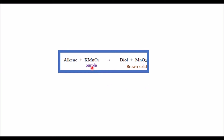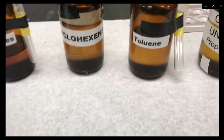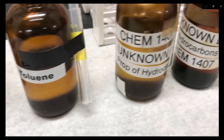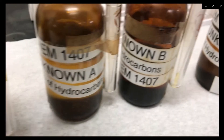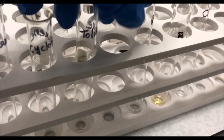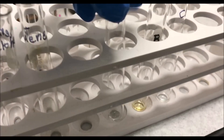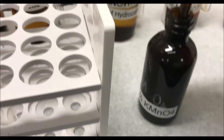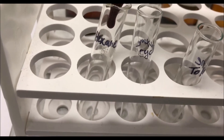In the potassium permanganate test, potassium permanganate reacts with an alkene but not with an alkane or aromatic compounds. The purple color of the permanganate changes to brown manganese dioxide, producing a diol in the presence of an alkene. Place 15 drops of hexane, cyclohexene, toluene, and the three unknowns in separate test tubes. After adding the hydrocarbon solutions, add five drops of 1% potassium permanganate into each tube and record the color change.